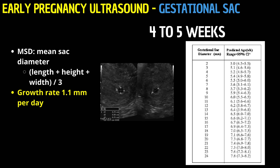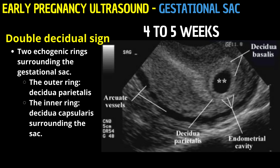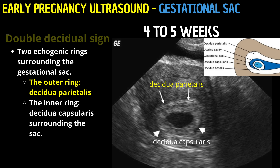The growth rate of the gestational sac, approximately 1.1 millimeters per day, further aids in monitoring the early pregnancy's health and development. Subsequent to the appearance of the gestational sac, a notable ultrasound feature known as the double decidual sac sign can be observed. This sign comprises two concentric echogenic rings surrounding the central anechoic area of the gestational sac. The outer ring signifies the decidua parietalis, while the inner ring delineates another layer of the decidua encompassing the sac.